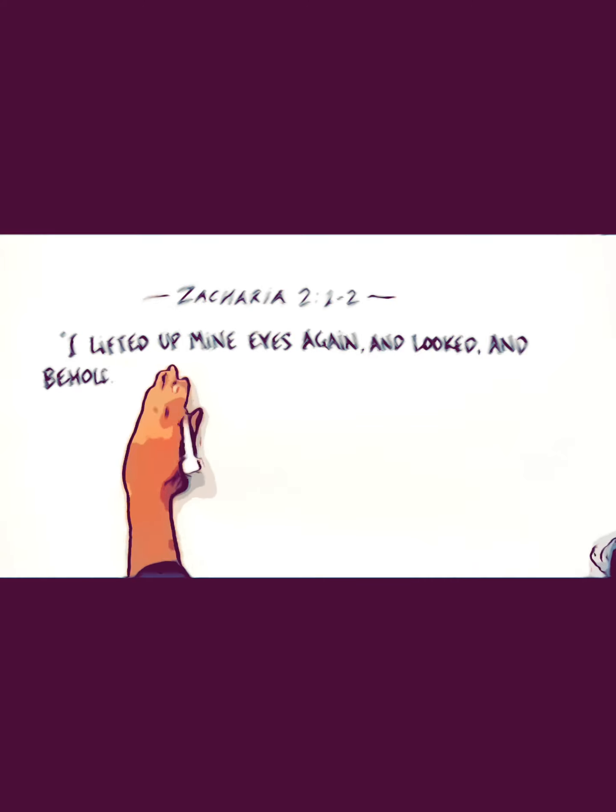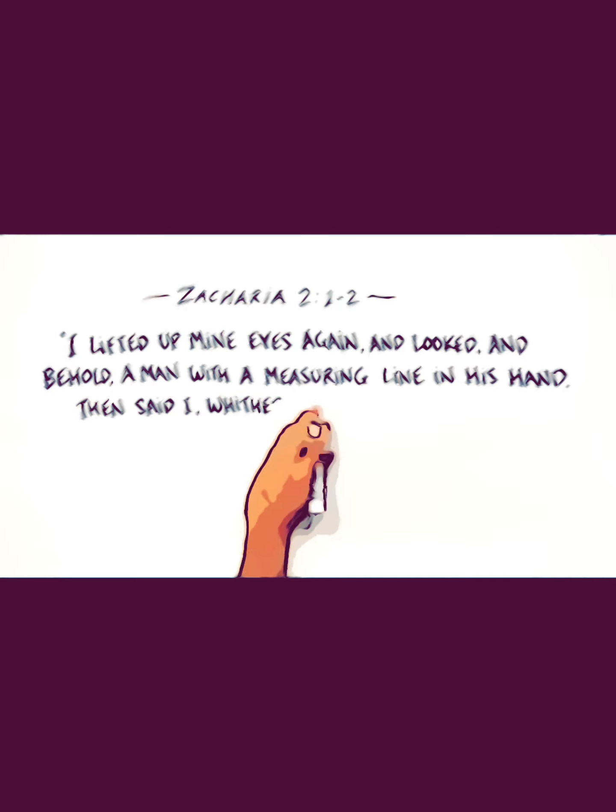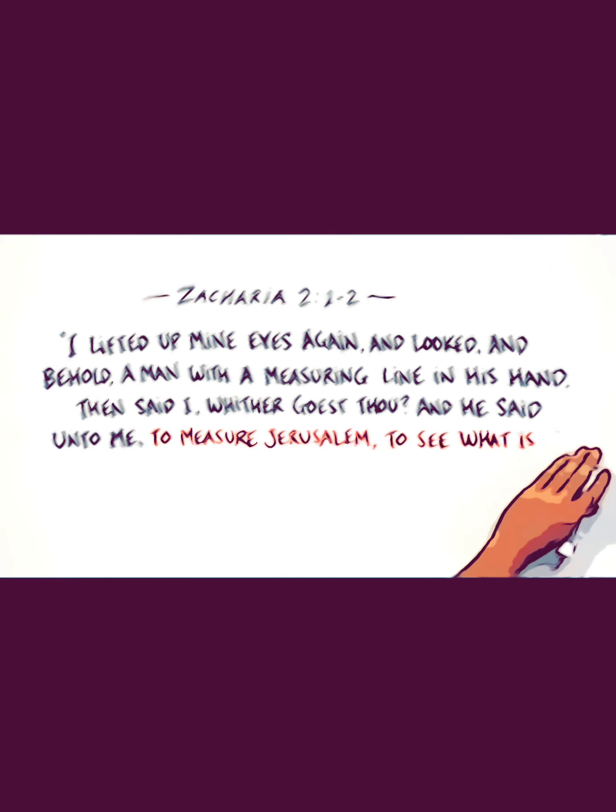From the Old Testament, Zechariah: 'I lifted up mine eyes and looked, and behold a man with a measuring line in his hand. Then said I, whither goest thou? And he said unto me, to measure Jerusalem, to see what is the breadth thereof and the length thereof.' This was the beginning of his prophetic vision—a man with a measuring line going to measure the city.